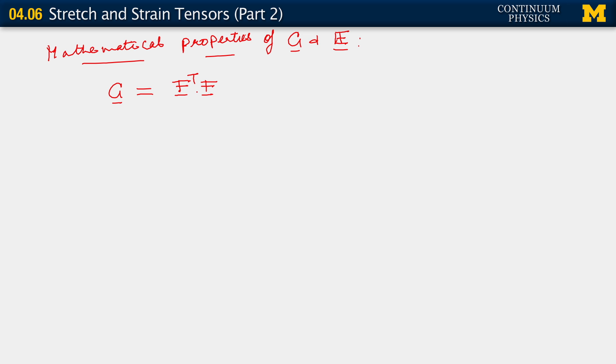What does this imply for C transpose? Well, C is the product of two tensors on the right hand side. The transpose of a product is the product of the transposes, but in the reversed order. That really makes no difference because it means we have to write this tensor first, transposed, followed by this tensor, transposed. But that just gives us back F transpose F, which is equal to C. So C transpose is equal to C, which means it is symmetric.